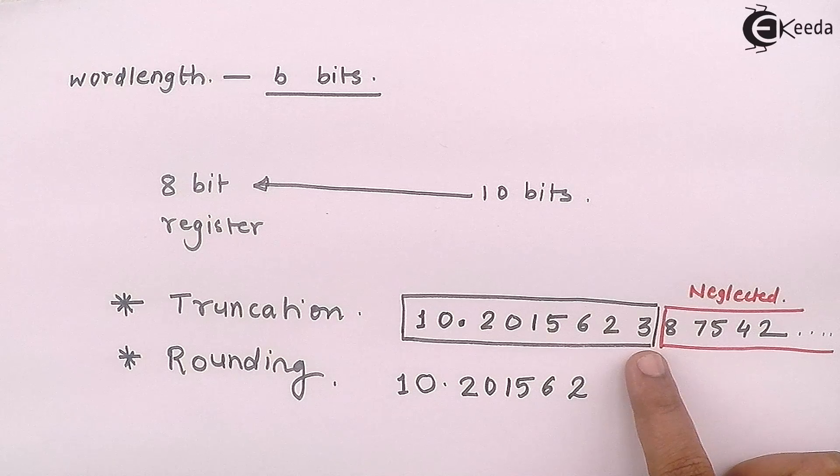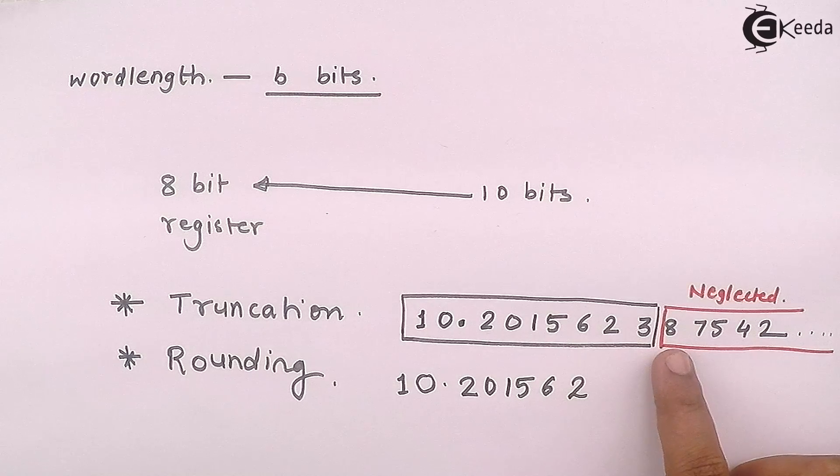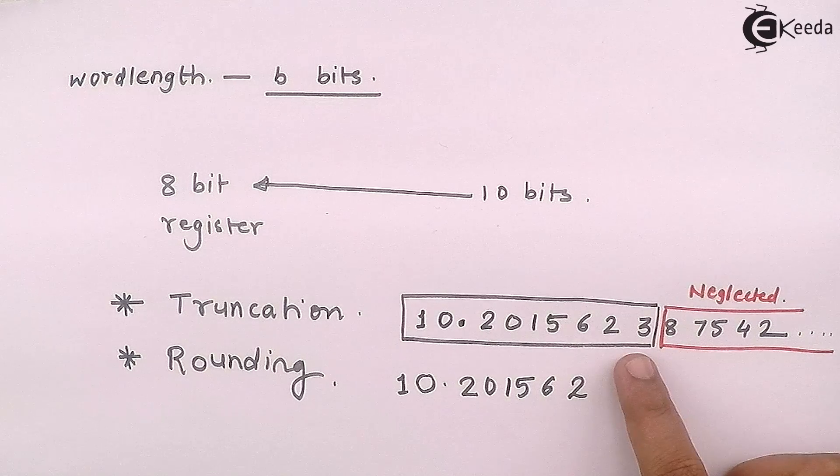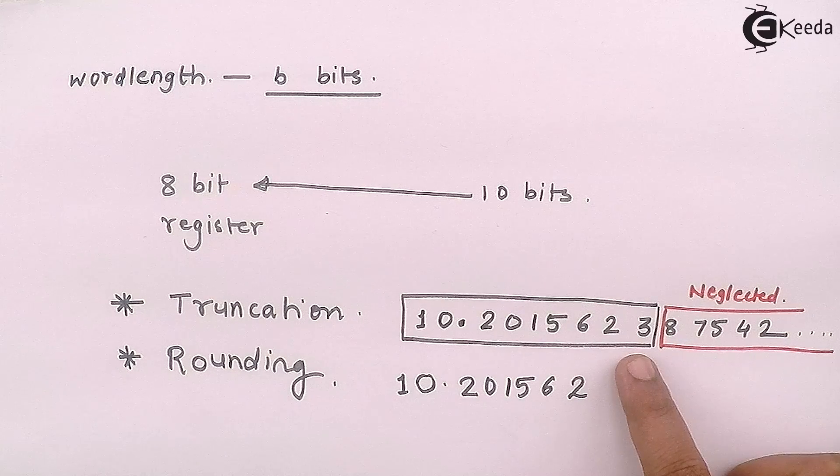So what rule that we use in maths is if the number is above 5, then I will round off the next digit to next higher one. Like for example this is 8 which is above 5, so I will round 3 to 4 instead of keeping it 3.